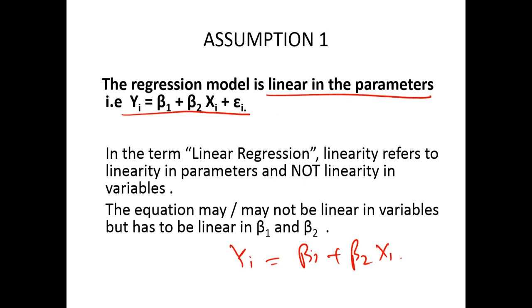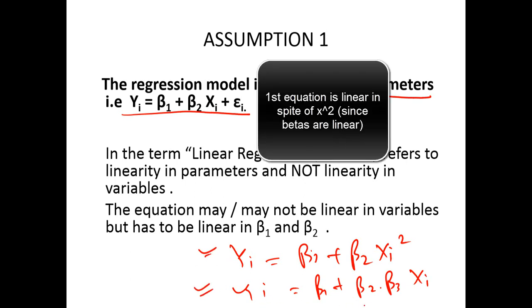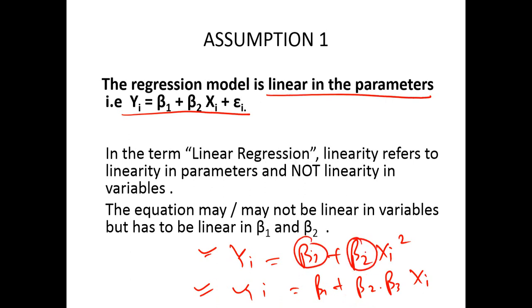yi equal to beta1 plus beta2 beta3 xi plus beta1 xi squared. The first equation is still a linear equation, whereas the second equation is not a linear equation. It has to be linear in parameters because both beta1 and beta2 here are linear, whereas here we don't have the parameters to be linear in nature.